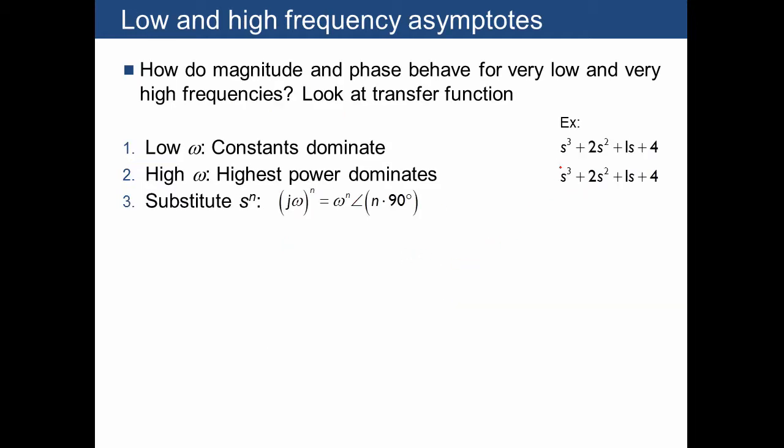If you have a string of S's of different powers, such as this polynomial here, and you're interested in the low frequency behavior, the thing to recall is that we're going to plug in S equals J omega. For low frequencies, this means we're plugging in close to S equals zero, in which case the constant term, the four, is going to dominate.